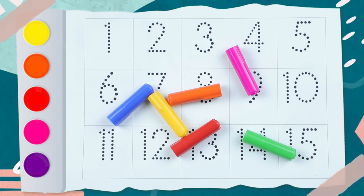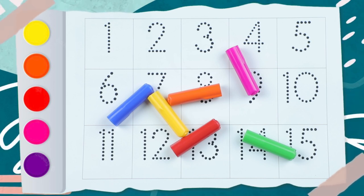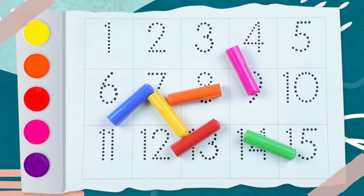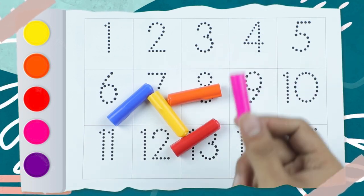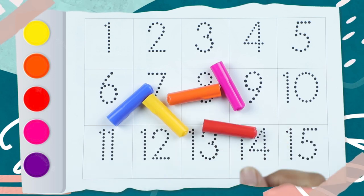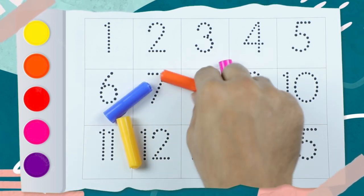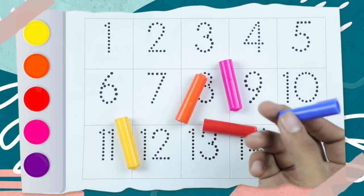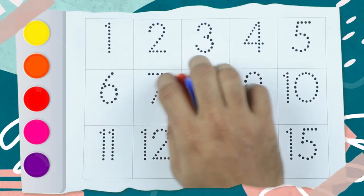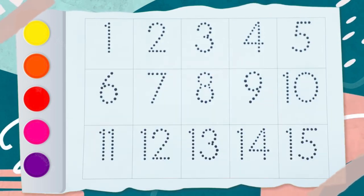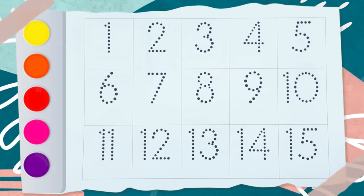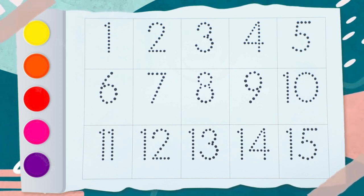Hello friends, today we learn numbers 1 to 15 with colors: green, pink, red, yellow, orange, and blue. So let's start the learning! 1, 2, 3, 4, 5, 6, 7, 8, 9.